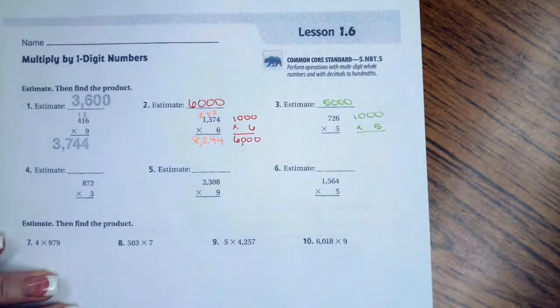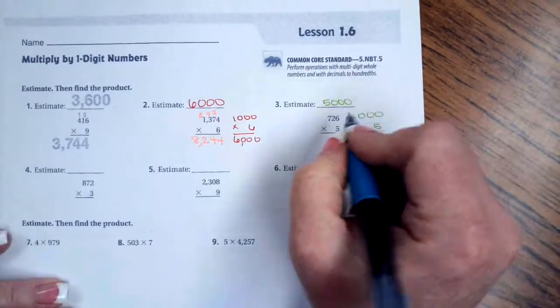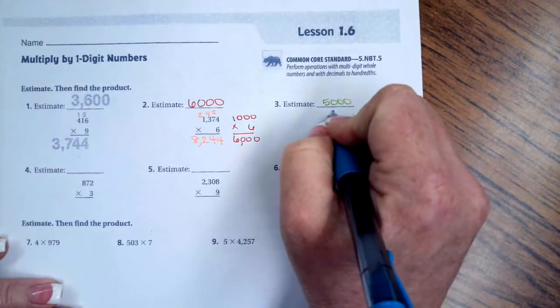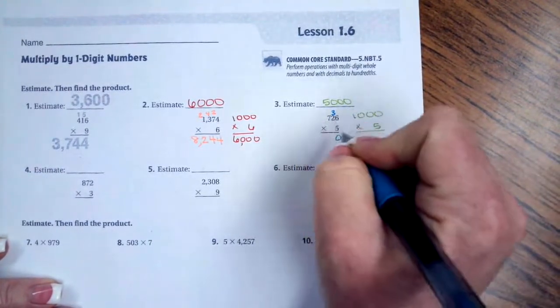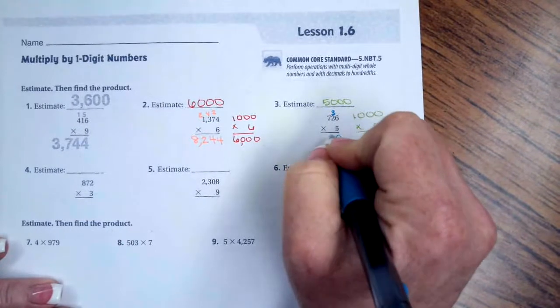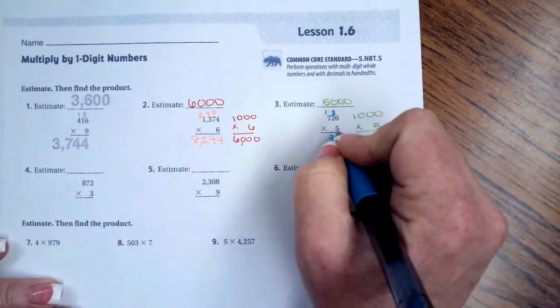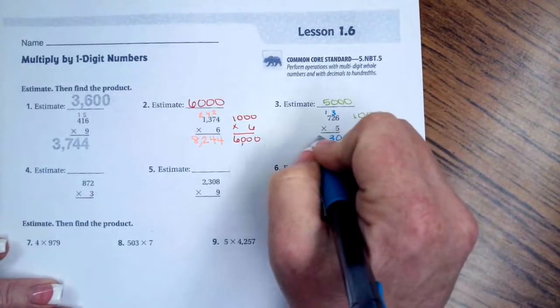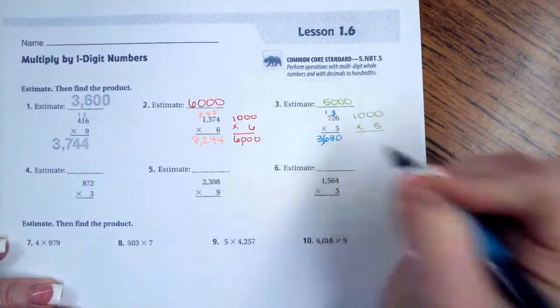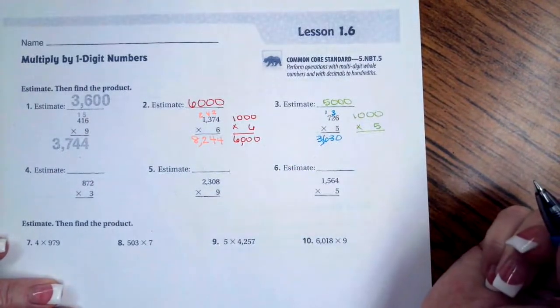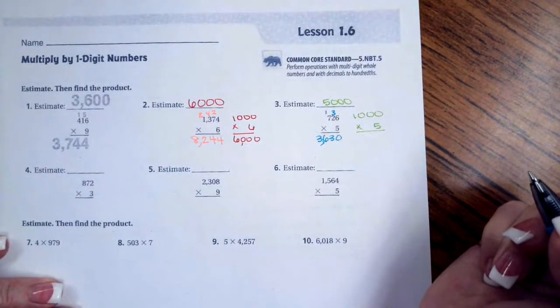Now we're going to do the real math. So five times six is thirty, carry our three. Five times two is ten plus three is thirteen, carry my one. Five times seven is thirty-five plus one is thirty-six. There is your answer. You guys go ahead and do four through six.